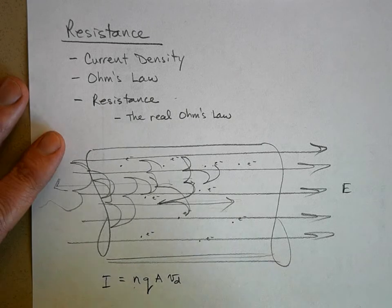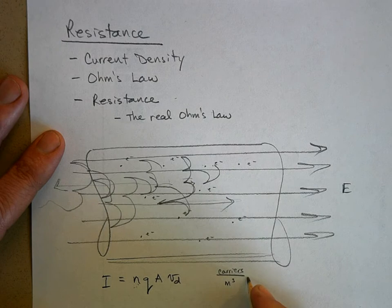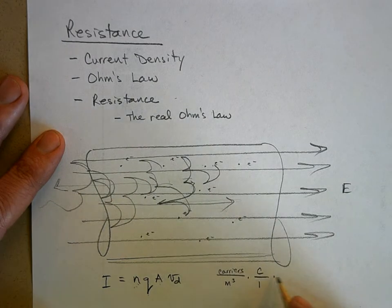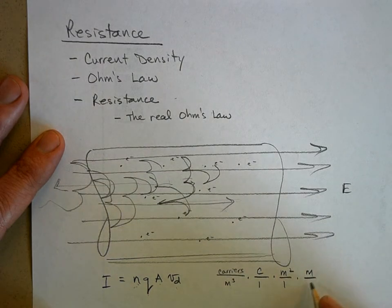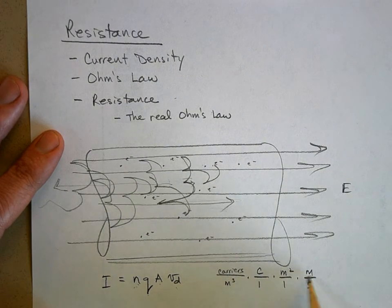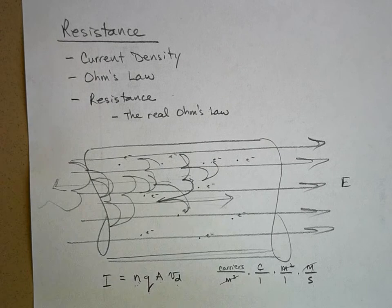These electrons have a drift velocity, and we said that the current is equal to the number of charges per unit volume, the charge on each charge carrier, and the cross-sectional area times the drift velocity. If you check the units: carriers per volume (m⁻³) times charge (Coulombs) times area (m²) times velocity (m/s) — meters cubed cancels, carriers is just a counting number, and you get Coulombs per second. That's an amp — that's current.